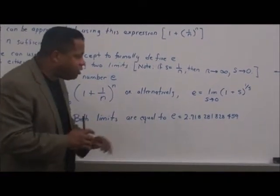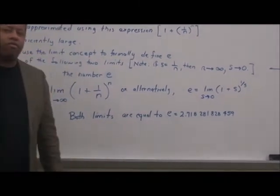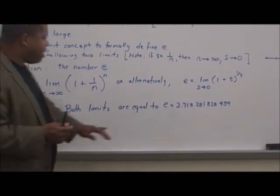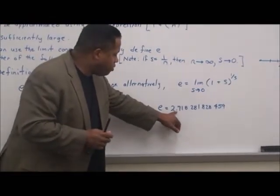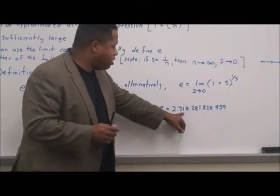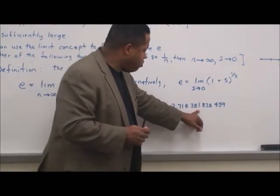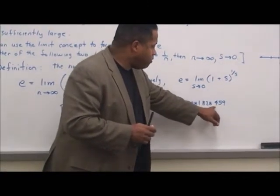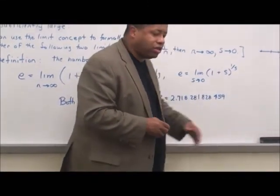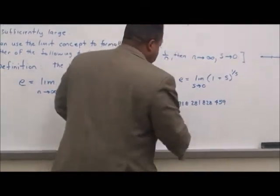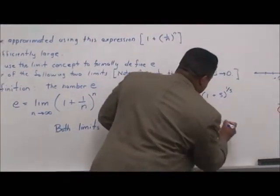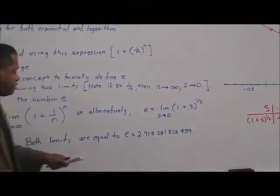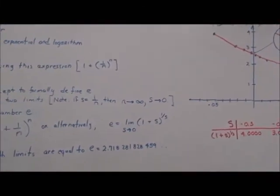Both limits are equal to the same irrational value: 2.71828182845... and this goes on and on, because it is an irrational number.